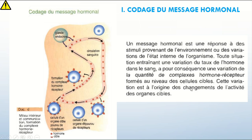Cette variation est à l'origine des changements de l'activité des organes cibles. Comme le montre la figure, nous avons une glande endocrine qui va normalement sécréter ses hormones, représentées par les étoiles rouges, dans la circulation sanguine. Cette hormone va être entraînée par le sang vers tous les organes du corps, mais elle ne va pas se fixer sur tous les organes.